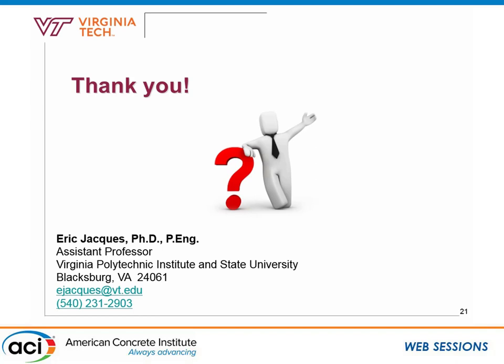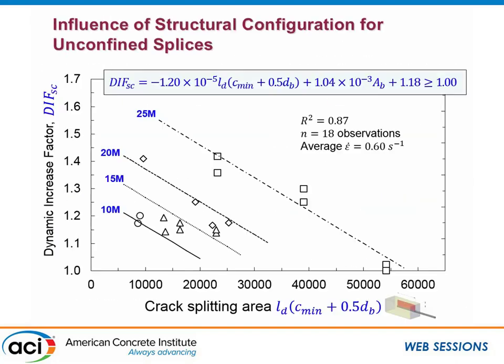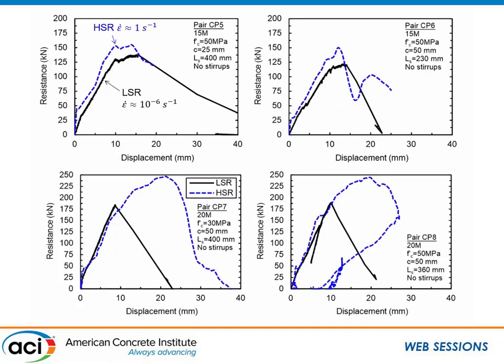Really nice work, Eric — very thorough, and the experimental setup is quite impressive. My question is: have you compared your experimental data with existing models, such as beam bond models and others out there? Yes — I've shown primarily peak strength results. We also looked at bond-slip relationships, since there was slippage of reinforcement in how the specimens were proportioned. We examined some existing simplified models — your basic parabolic ascending and descending branch models — and applied rate factors to account for that behavior, though that work isn't discussed here.